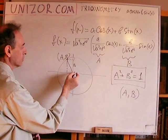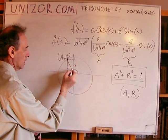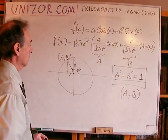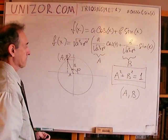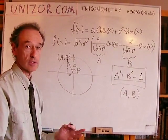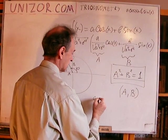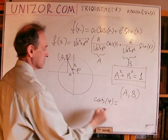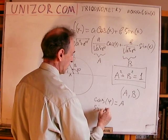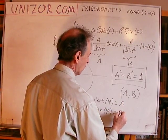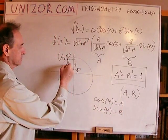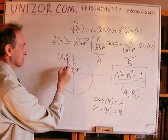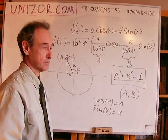All right. Now, every point on the unit circle corresponds to a certain angle, φ. Right? And, by definition, cosine of φ is equal to abscissa, which is A, and sine of φ is equal to ordinate, which is B. So, this is by definition a cosine, and this is by definition sine of this angle, φ.